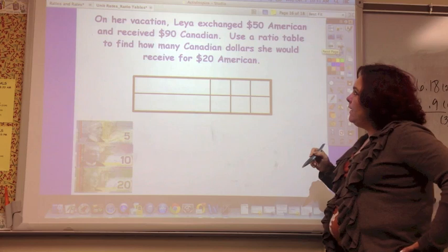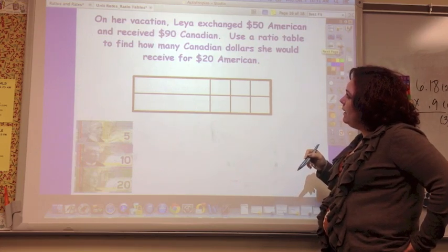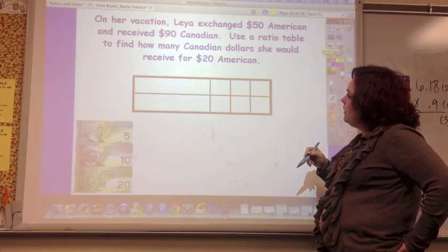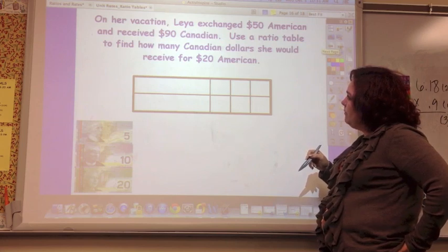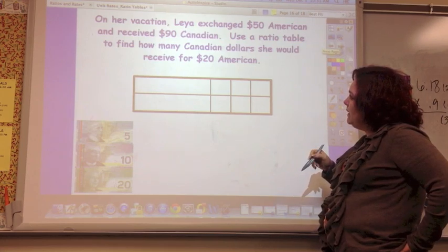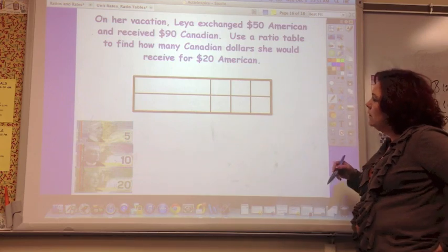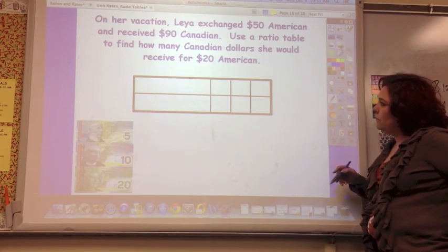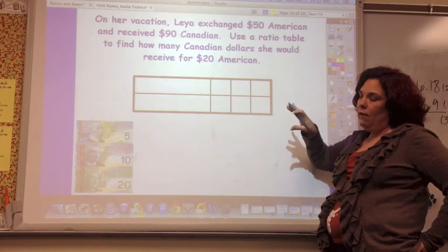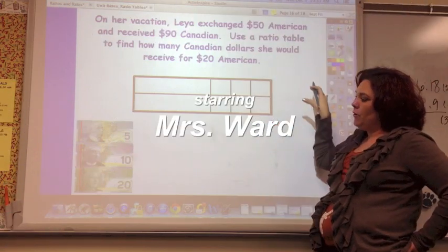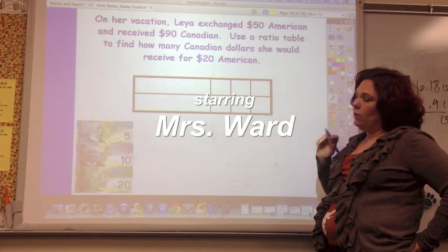Last problem: On her vacation, Leah exchanged $50 American and received $90 Canadian. Use the ratio table to find out how many Canadian dollars she would receive for $20 American. Make your ratio table, simplify, then multiply to find the equivalent.